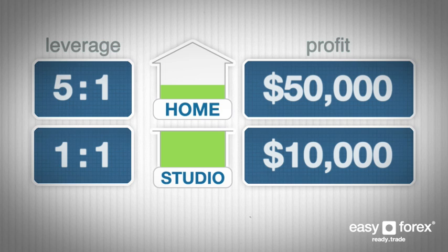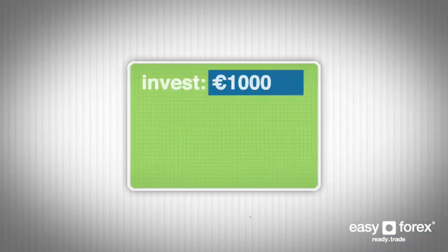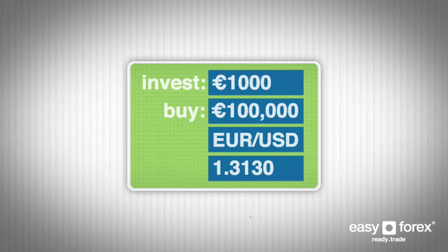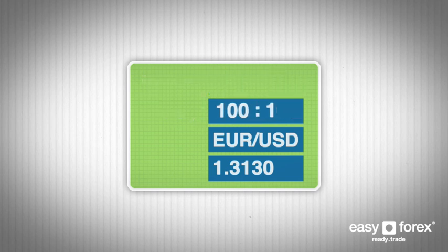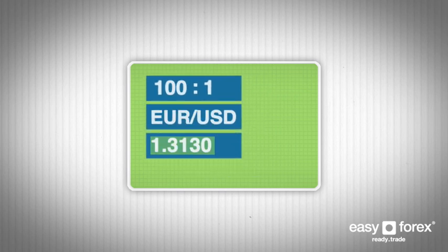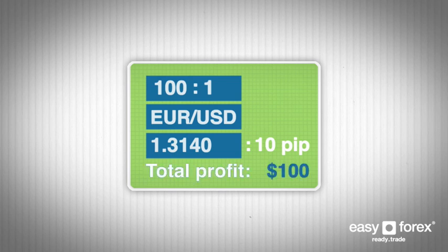Let's see how we can apply leverage to a forex deal. You currently have €1,000 to invest, and you decide to buy €100,000 worth of EURUSD at a rate of 1.3130. Since 1,000 is one-hundredth of 100,000, you're using a leverage of 100 to 1. The EURUSD rate then moves up to 1.3140 and you decide to close your deal, making a 10-pip profit. Using the PIP formula from the What is a PIP video, you can calculate that your total profit is $100. If you had not traded with leverage, you would have only made a $1 profit.